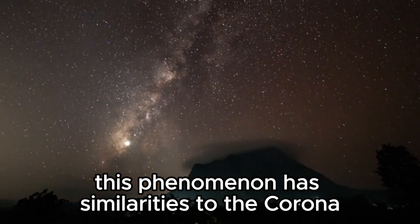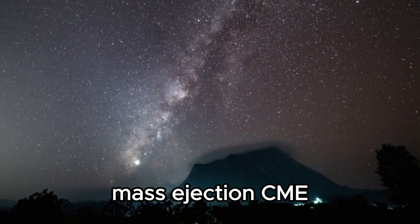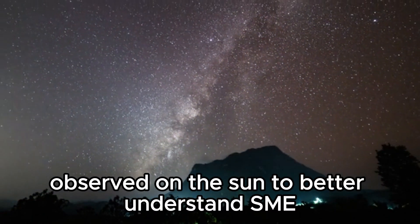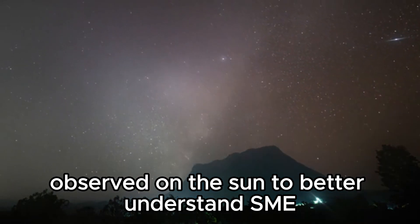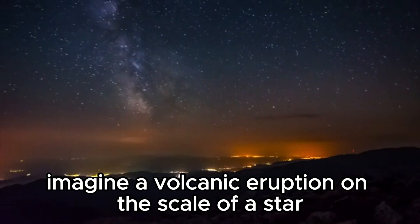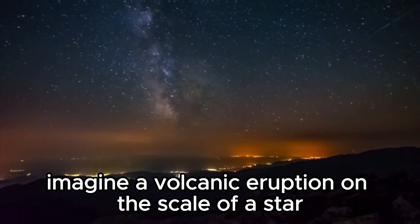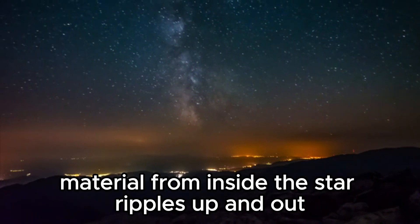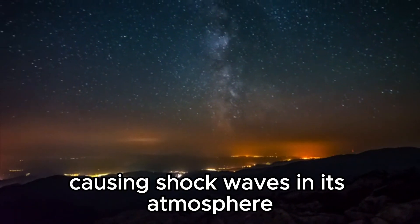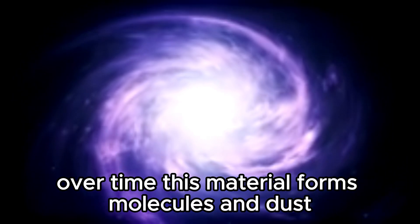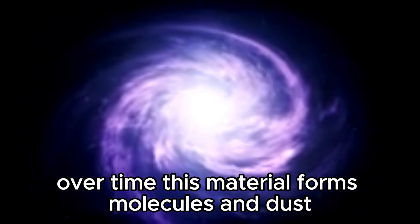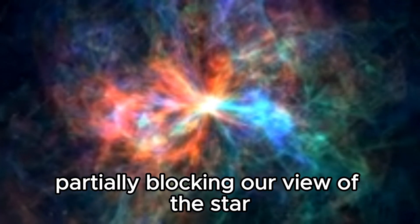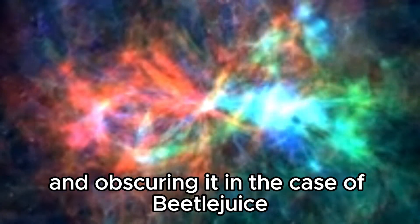This phenomenon has similarities to the coronal mass ejection, CME, observed on the sun. To better understand SME, imagine a volcanic eruption on the scale of a star. Material from inside the star ripples up and out, causing shock waves in its atmosphere. Over time, this material forms molecules and dust, partially blocking our view of the star and obscuring it.